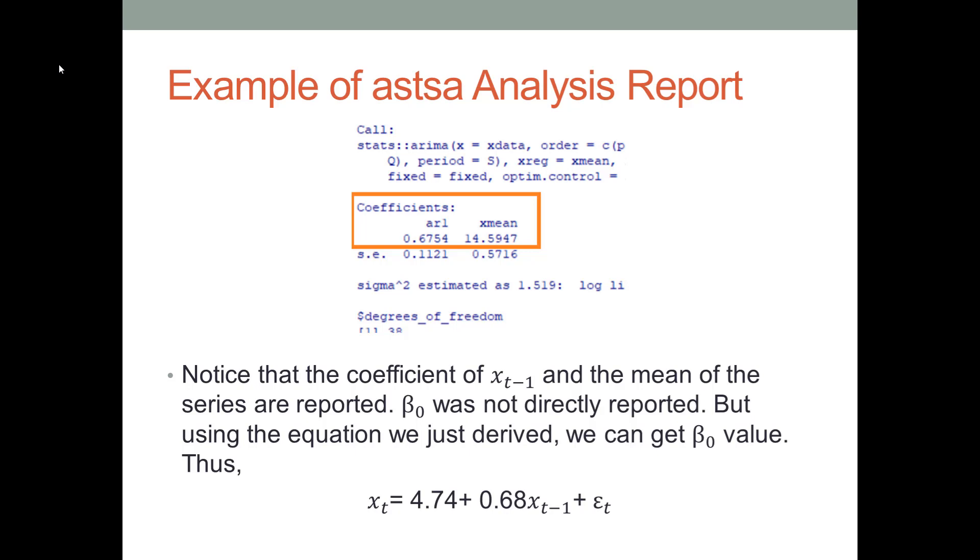For example, if you use the astsa package to build an AR(1) model, the software will report some values as you can see on this slide. Under AR1, we have 0.6754. Let's round it to 0.68. This is the value for β_1 in our model, the coefficient value. So for β_1, the coefficient, we don't have to calculate anything.